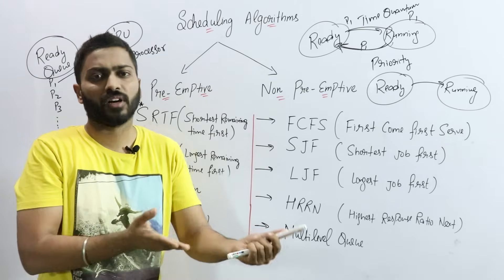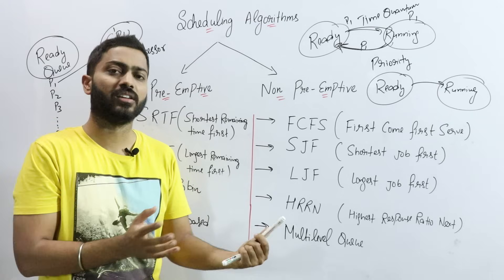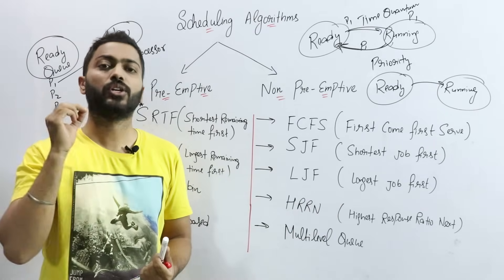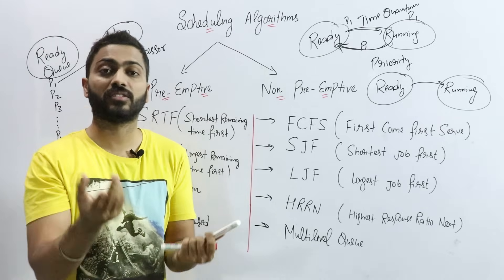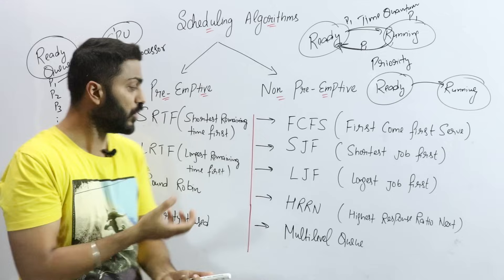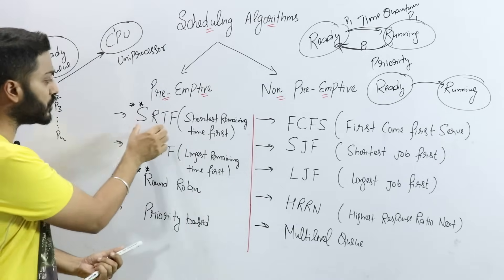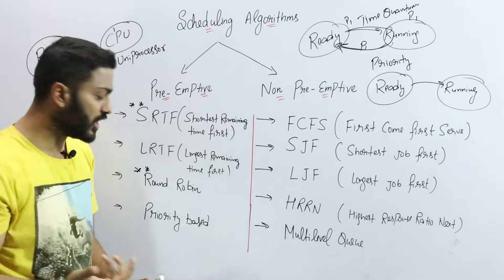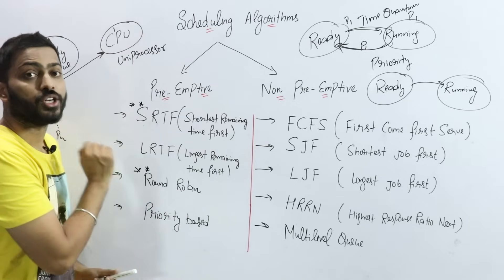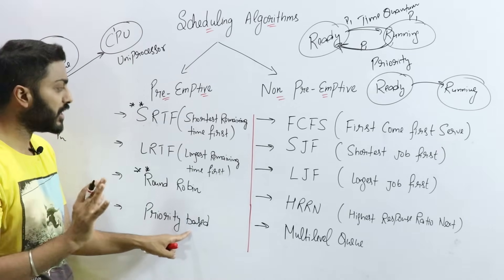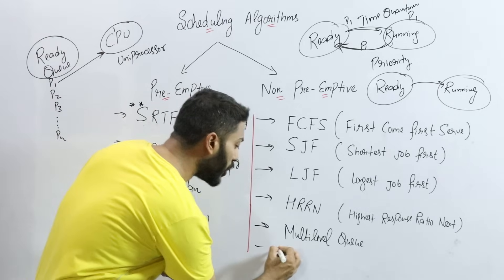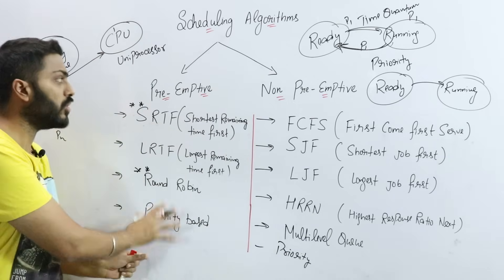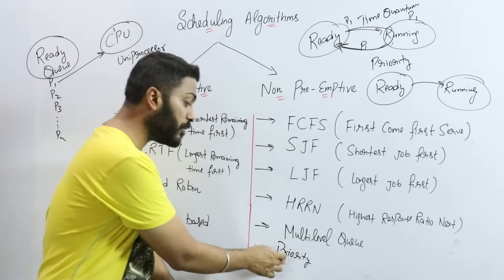In terms of recent exams — looking at the last few years of GATE questions, UGC NET, and even college and university end-term and mid-term exams — you will find questions on these algorithms. Most questions come from Shortest Remaining Time First and Round Robin, though Longest Remaining Time First is also used. Priority scheduling can be both preemptive and non-preemptive, though we mostly classify it as preemptive.